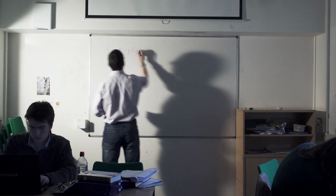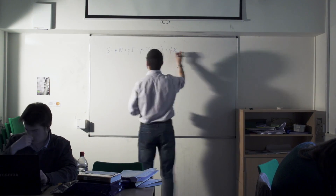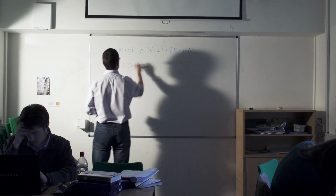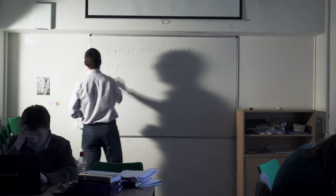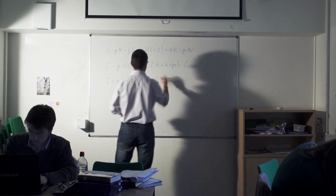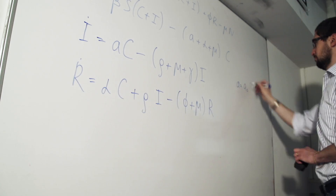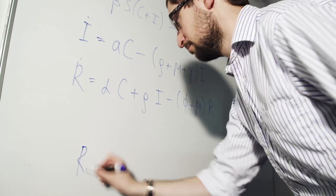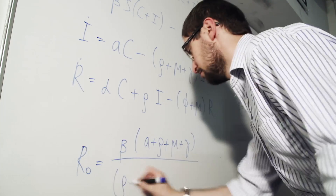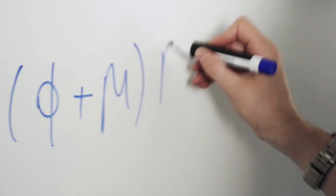Mathematical modeling allows you to actually interrogate the data, it allows you to understand what really happens on the ground, it allows you to answer the question of what's behind what you see, and even more importantly it allows you to actually make predictions and make forecasts.